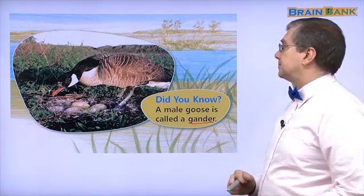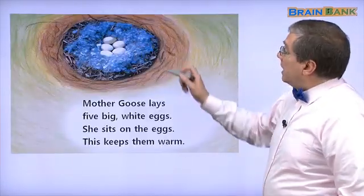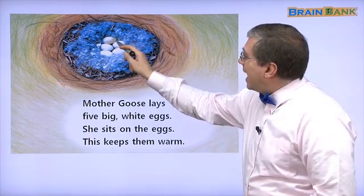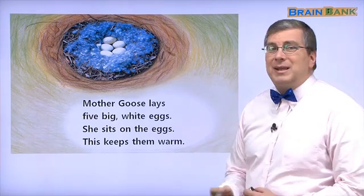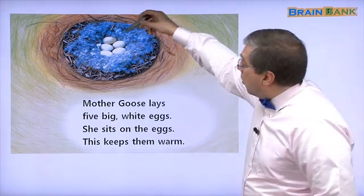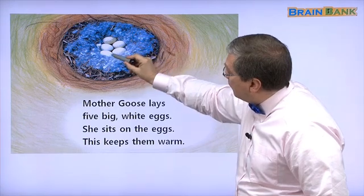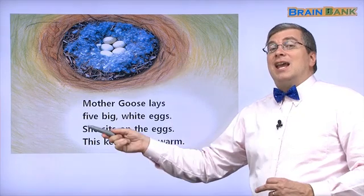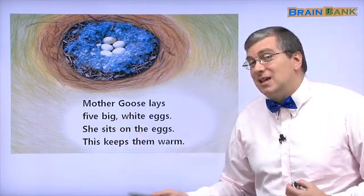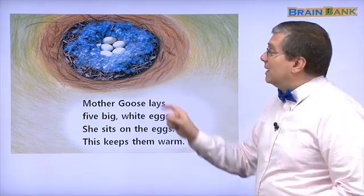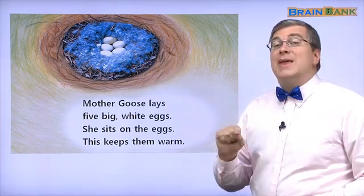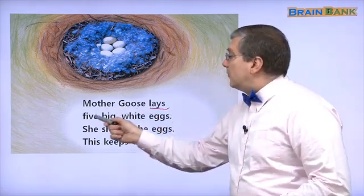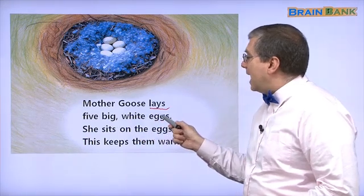Here is the nest. How many eggs are in the nest? Look at the eggs — how many eggs do you see? One, two, three, four, five — five eggs! How many baby geese did we see? Five geese. So this is before they were born.